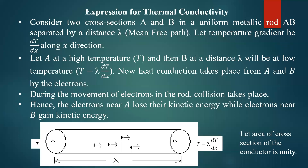Let the temperature gradient be dT/dx along the x direction. In this direction the temperature is decreasing, and that decrease of temperature is uniform — that is dT/dx. If there is a change of length dx there will be a change of temperature dT, and uniformly this temperature is decreasing.